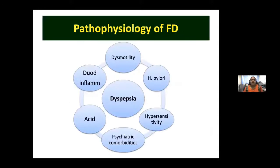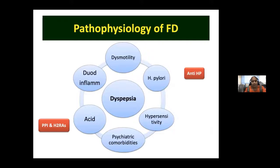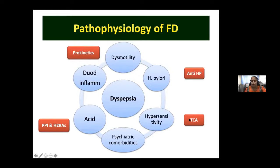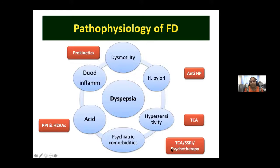Goal-directed therapy in functional dyspepsia: for acid, use PPI, H2 blockers, and antacids on an SOS basis; for dysmotility, use prokinetic agents; for hypersensitivity, tricyclic antidepressants (TCAs) are very useful and underutilized in our country — 25 mg twice daily is effective not as an antidepressant but as a modulator of visceral function. For definite psychiatric comorbidities — depression or psychosis — use full-dose TCAs, SSRIs, and psychotherapy, which are found to be effective.